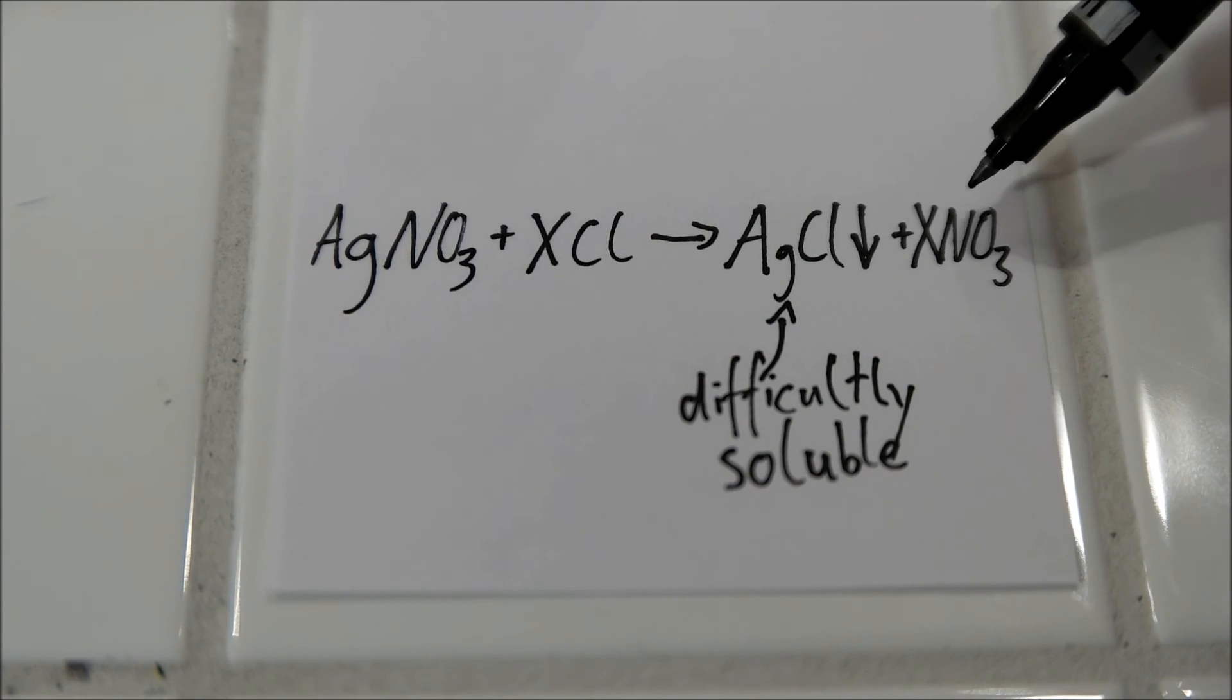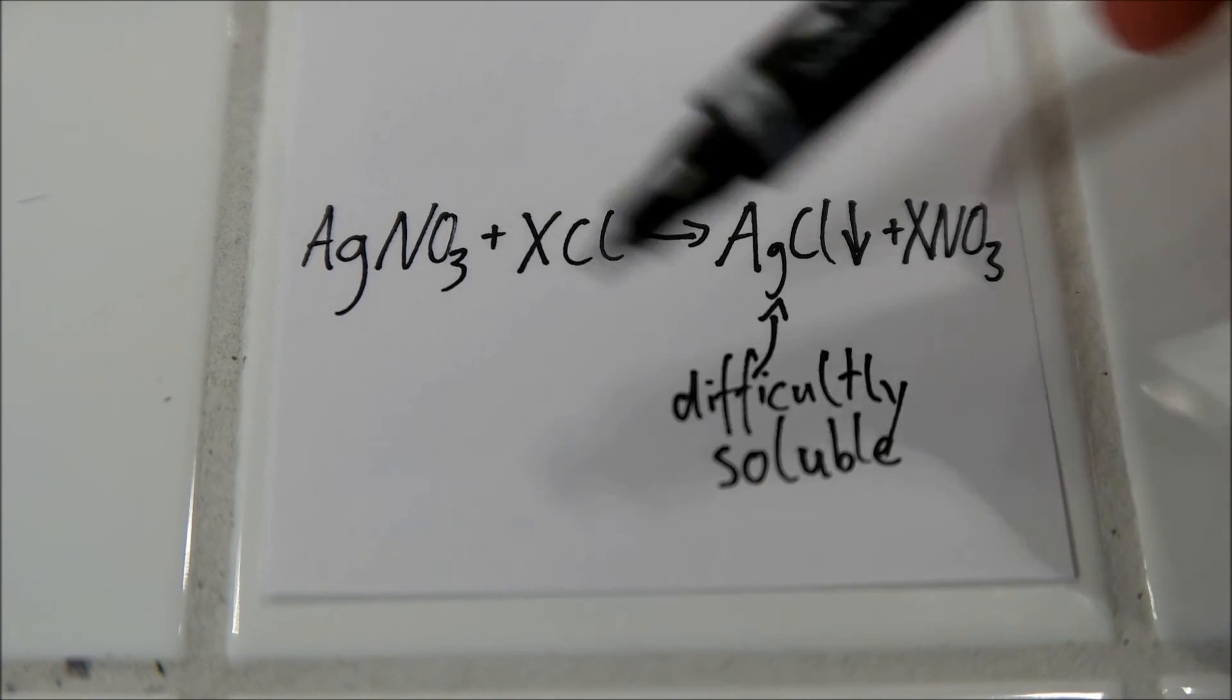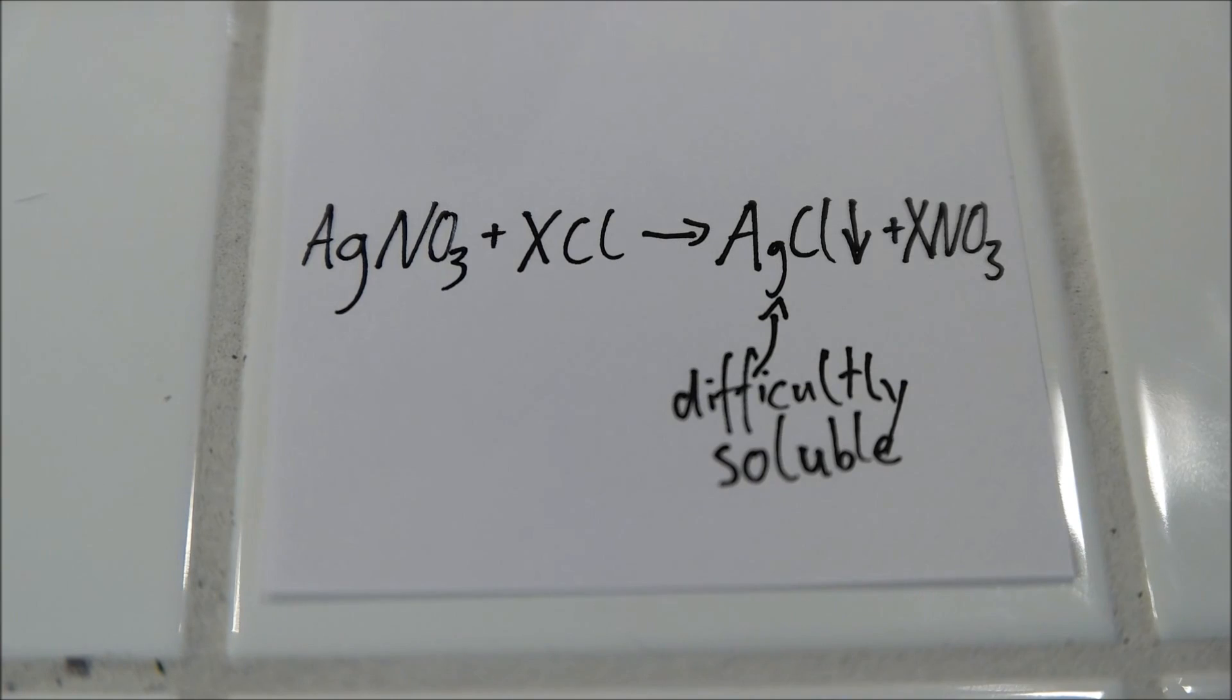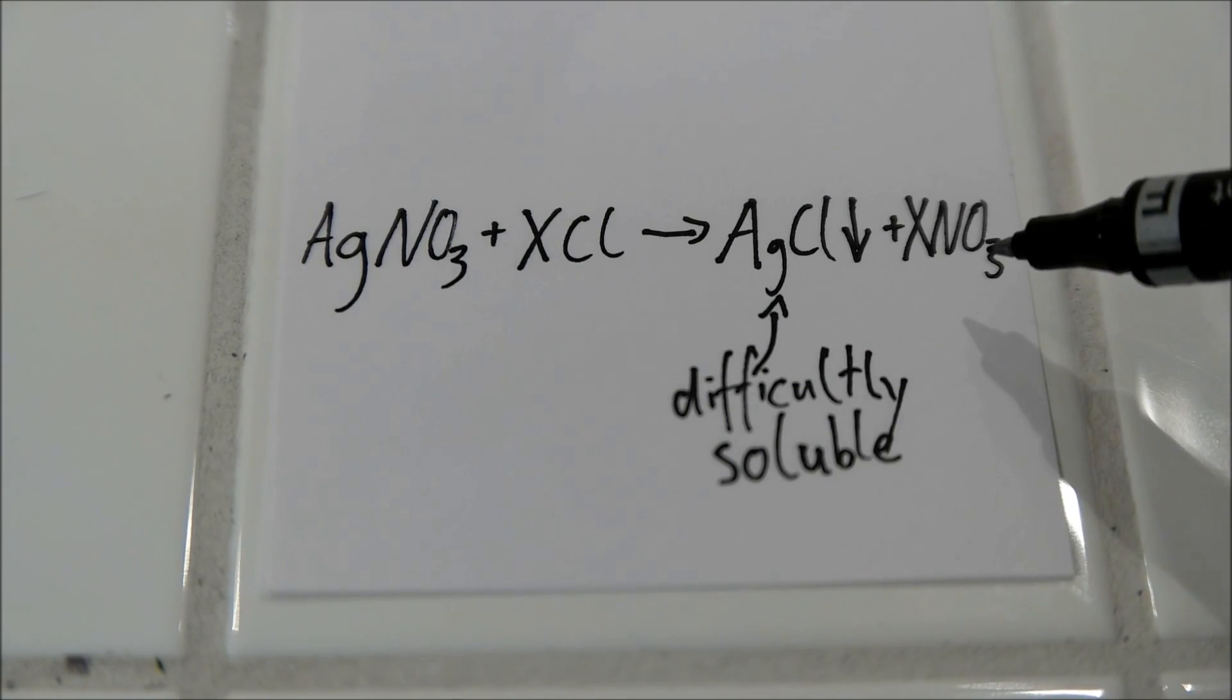And another salt is produced from this cation with the nitrate. So this for example can be sodium nitrate.